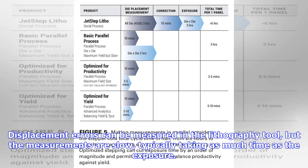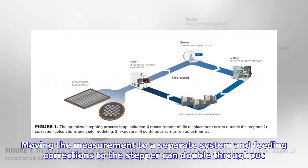Displacement errors can be measured in the lithography tool, but the measurements are slow, typically taking as much time as the exposure. Moving the measurement to a separate system and feeding corrections to the stepper can double throughput.